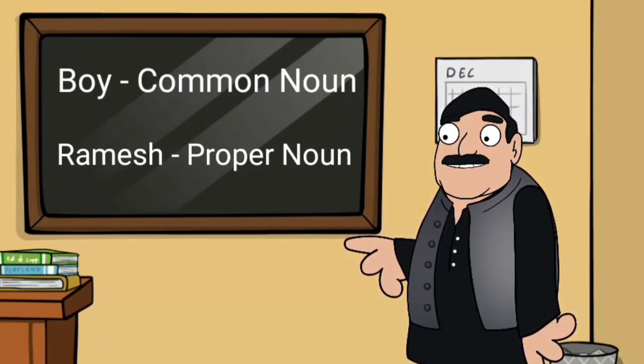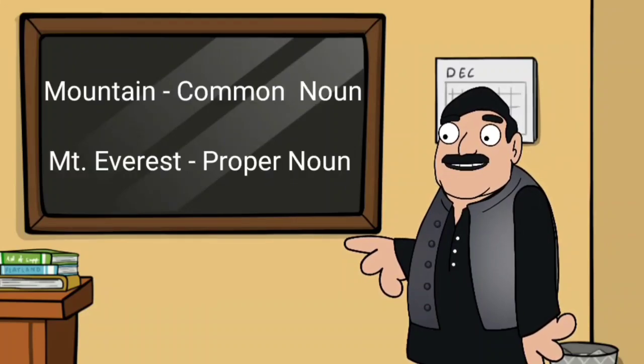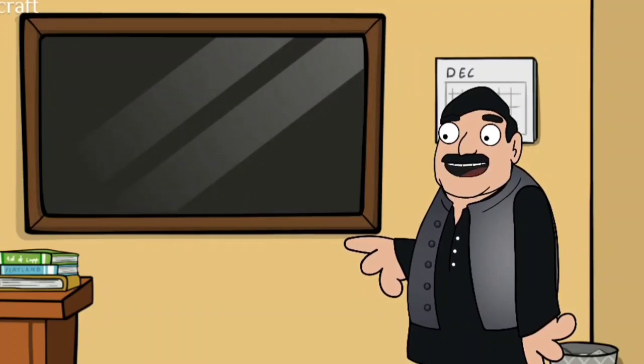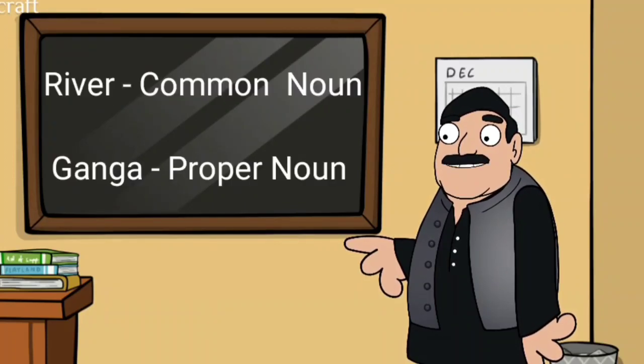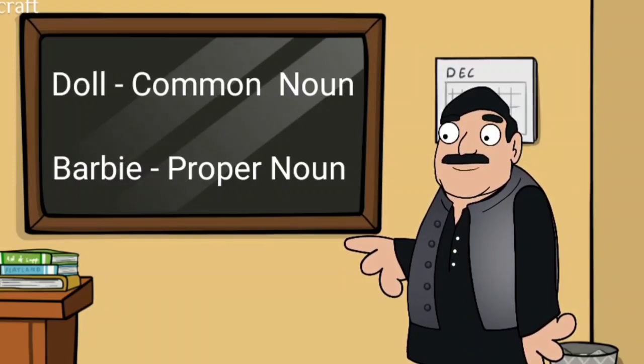Let's see some more examples. Mountain is a common noun. It means any mountain. Mount Everest is a proper noun. It's a special name given to one particular mountain. Similarly, river is a common noun and Ganga is a proper noun. Doll is a common noun. Barbie is a proper noun.